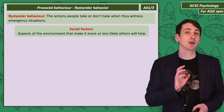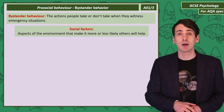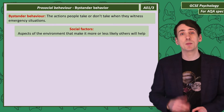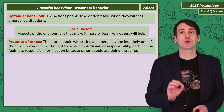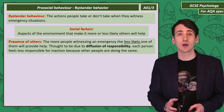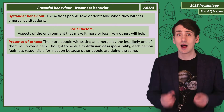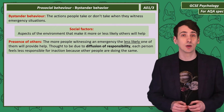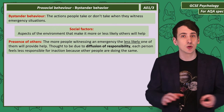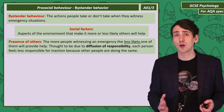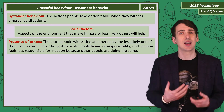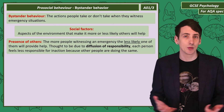Starting with social factors — we're thinking about aspects of the environment that make it more or less likely that other people will help. The presence of others is a social factor. It's thought the more people who witness an emergency, the less likely anyone is to help. That's a bit counterintuitive, but this is due to the diffusion of responsibility. If there are lots of people not taking action, each one feels less responsible because nobody else was helping.